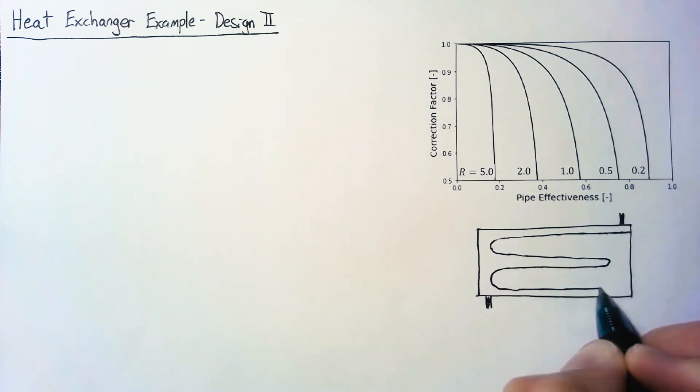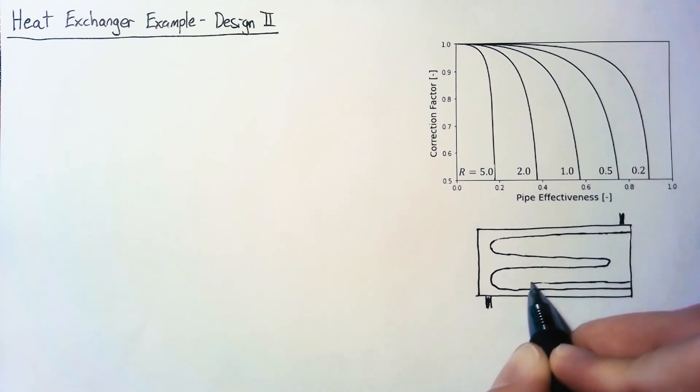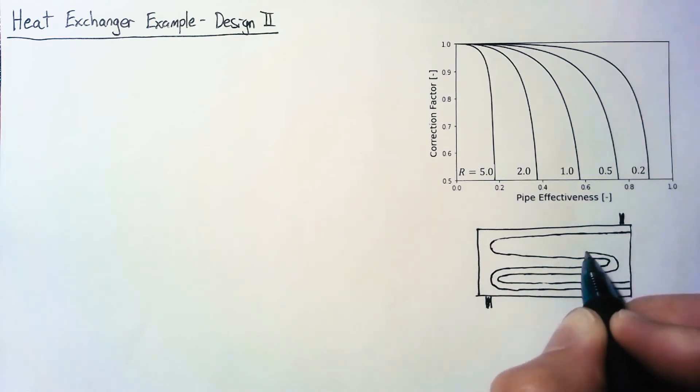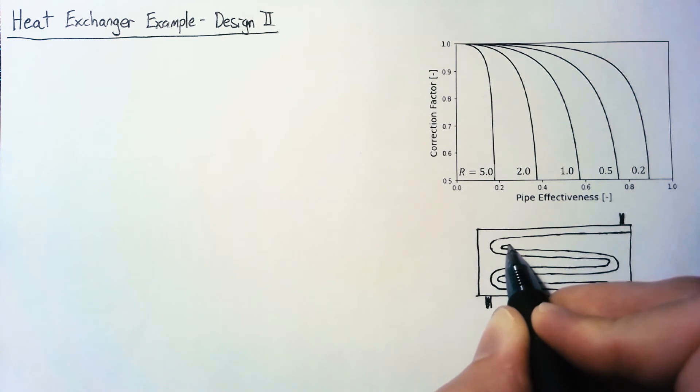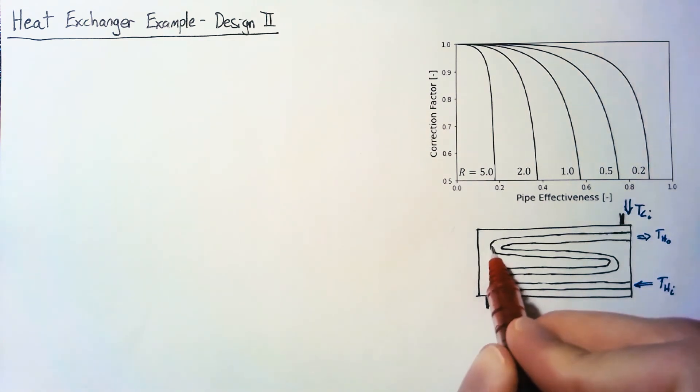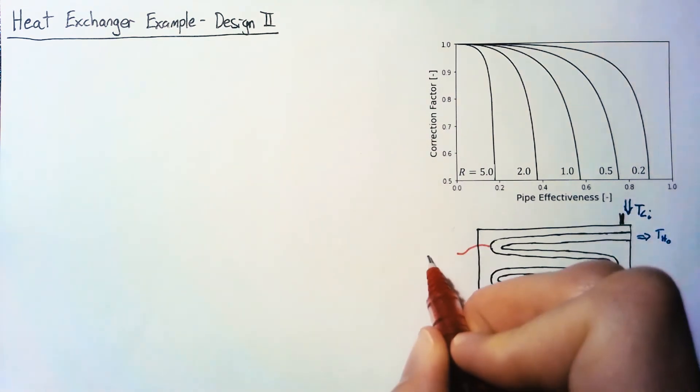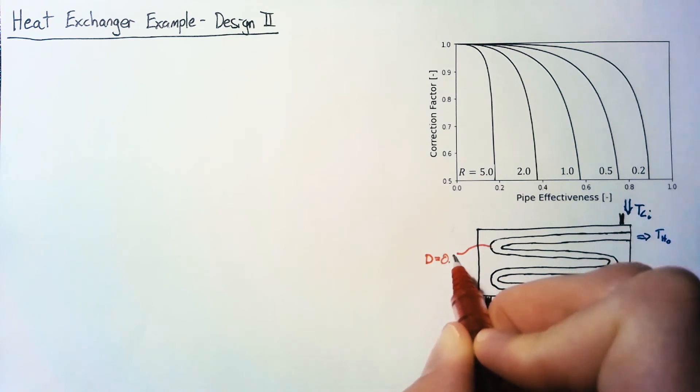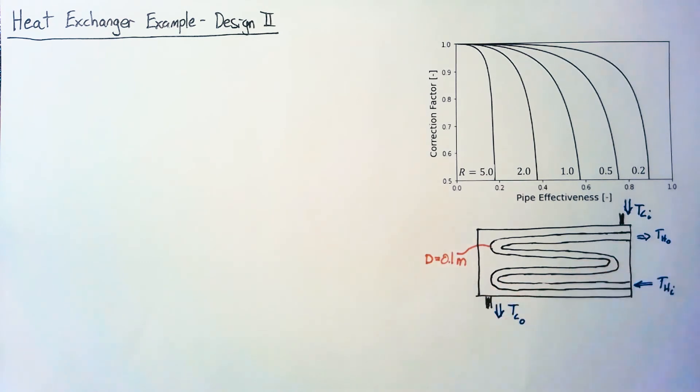The advantage of this is that we can have multiple passes of our pipe, which means that we can reduce the overall volume of our heat exchanger by just squishing multiple passes together. In this case, we'll have our hot fluid flowing through the pipe, though it's possible for either fluid to be in either location. The last piece of geometry is going to be the actual diameter of our pipe here, and we're going to say that that is just 0.1 meters.